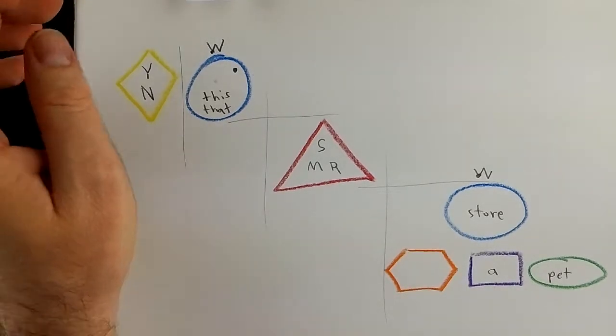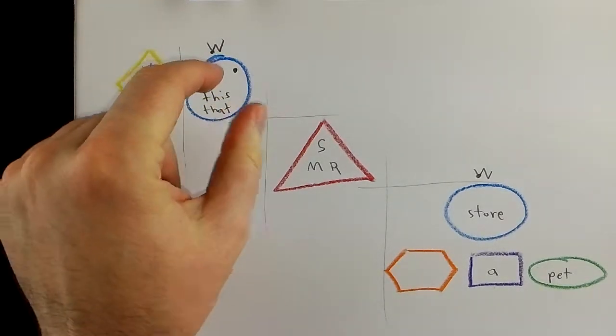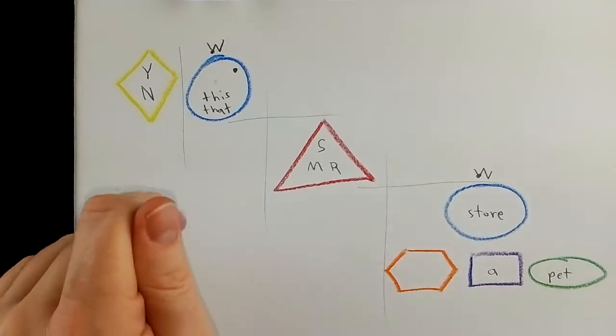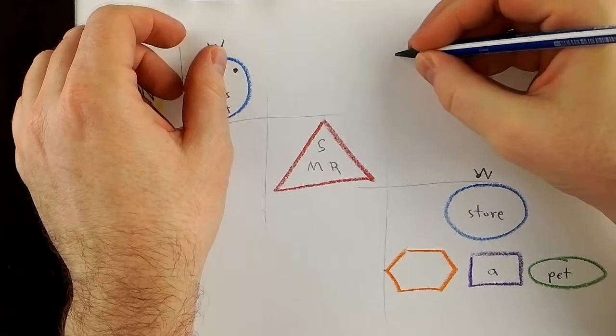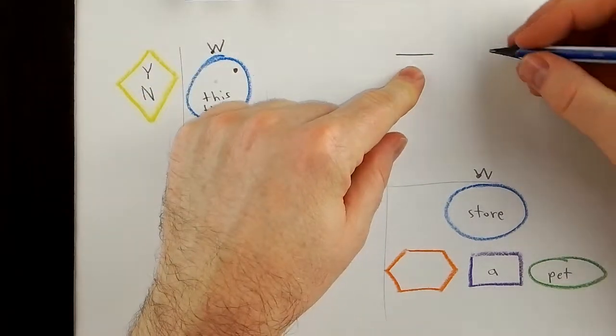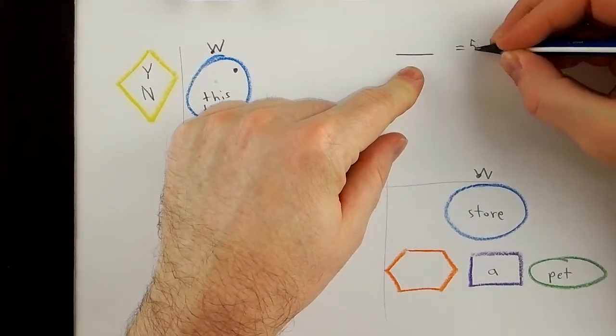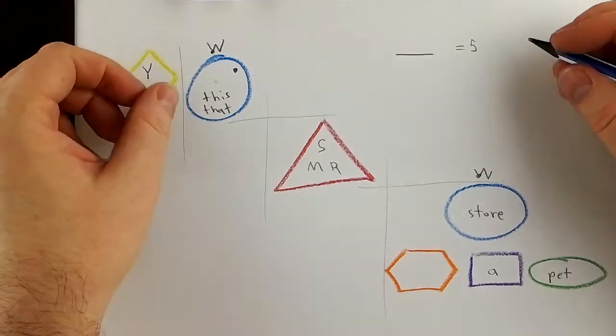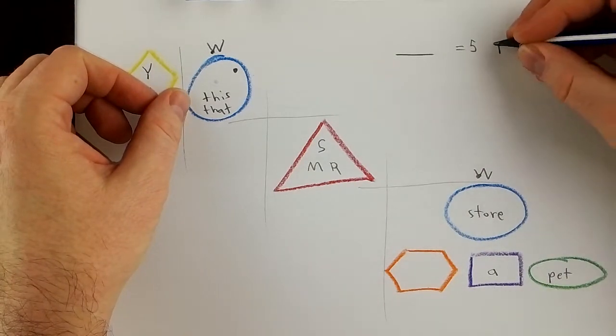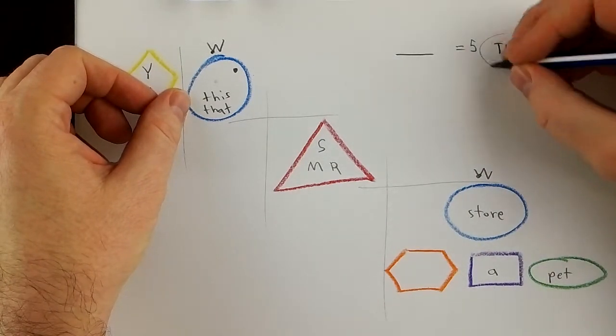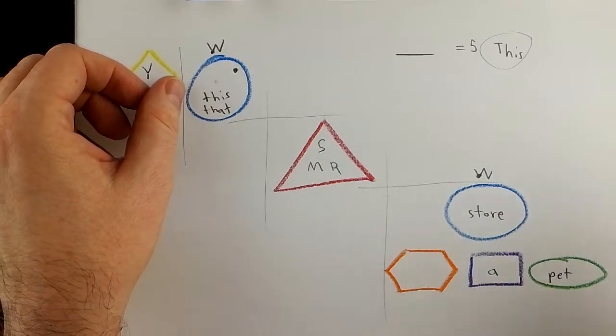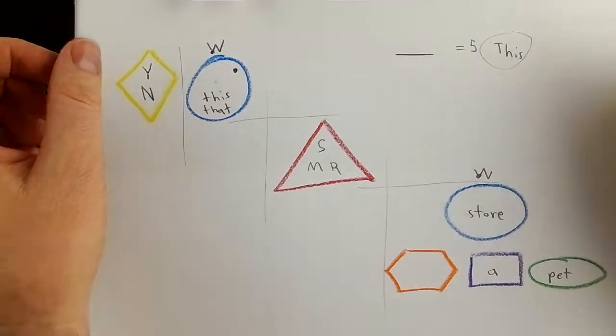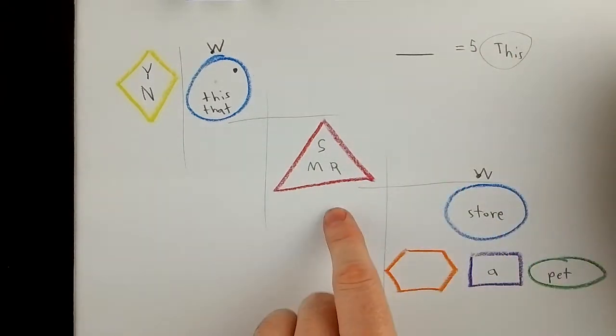But number five. Is number five it's a pet store or this is a pet store? It depends. This equals number five. Number five starts with this is a pet store or that is a pet store. But if you have a question, if you say, what's that?